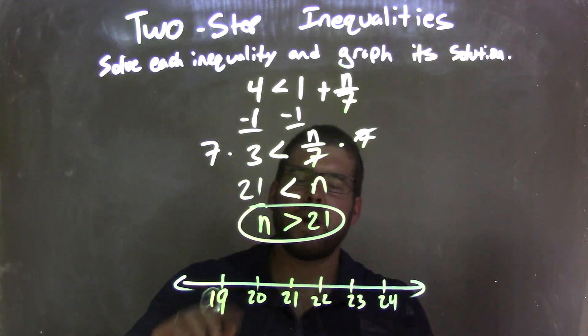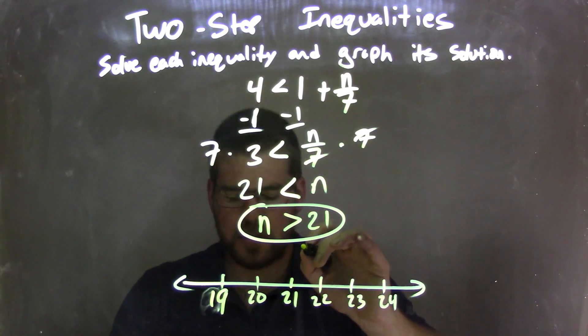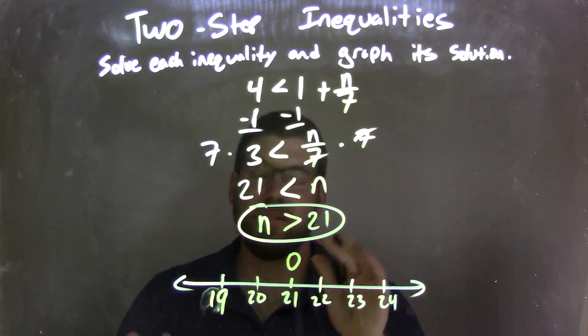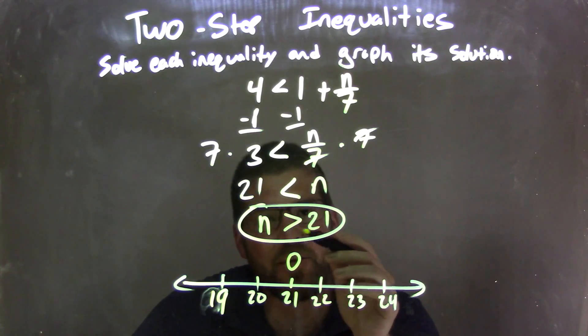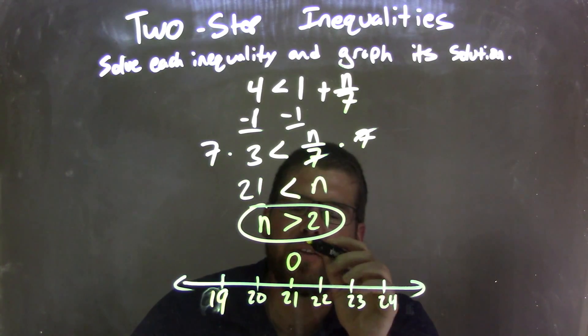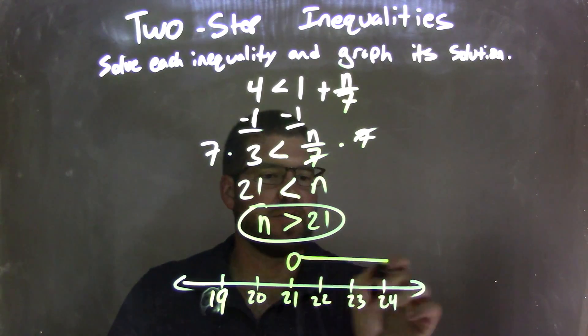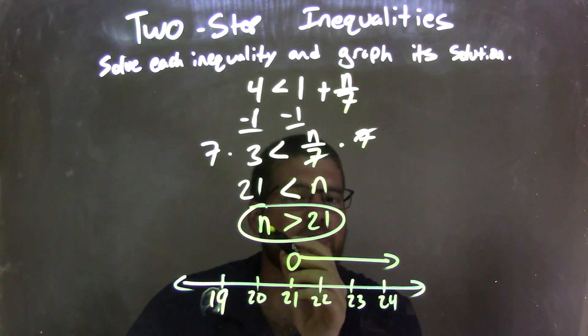So we said n is greater than 21. Well, we need a closed circle here. Sorry, open circle. Open circle, not closed circle. Open circle because we said n is not equal to 21, just greater than. So, greater than 21, open circle, and then we need to shade to the right because we said n is greater than 21.